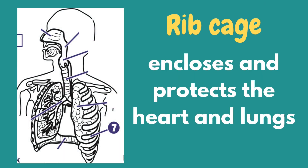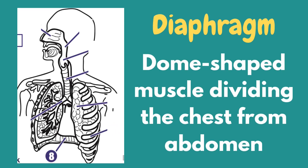The organs of the respiratory system need to be protected. The ribcage is the arrangement of ribs attached to the vertebral column and sternum in the thorax, which encloses and protects the heart and lungs from external injury. The muscle that helps us in the process of breathing is called the diaphragm. The diaphragm is a thin skeletal muscle that sits at the base of the chest and separates the abdomen from the chest. It contracts and flattens when you inhale, creating a vacuum effect that pulls air into the lungs. When you exhale, the diaphragm relaxes and air is pushed out of the lungs.